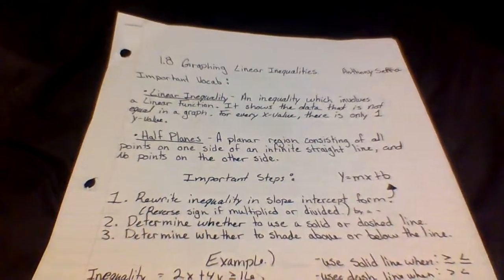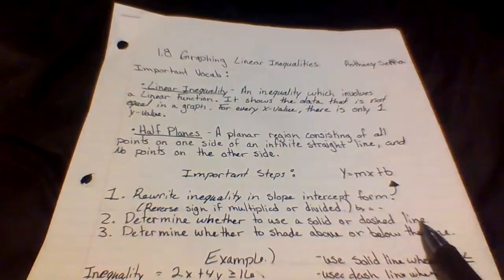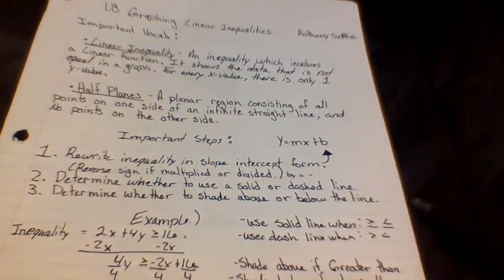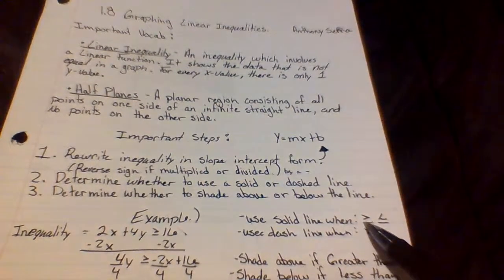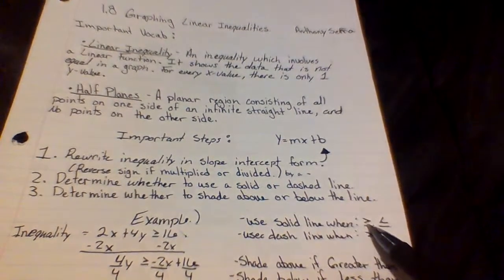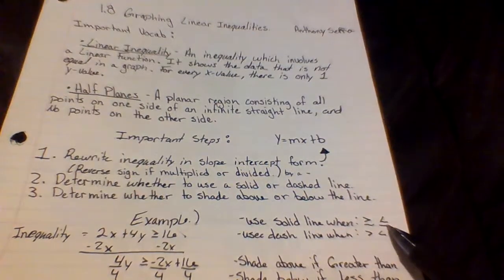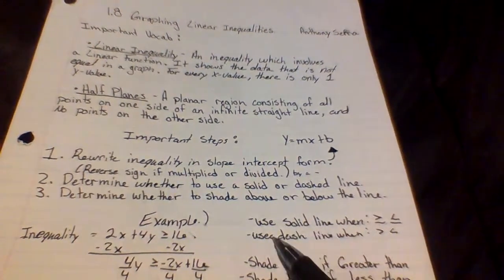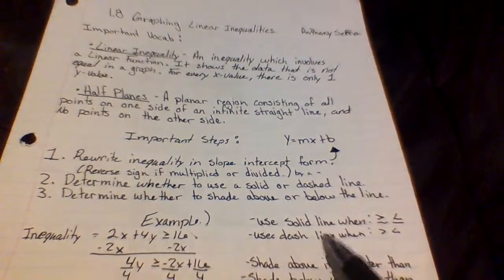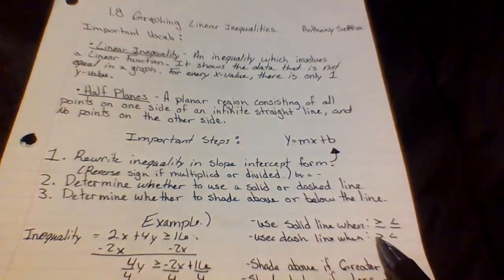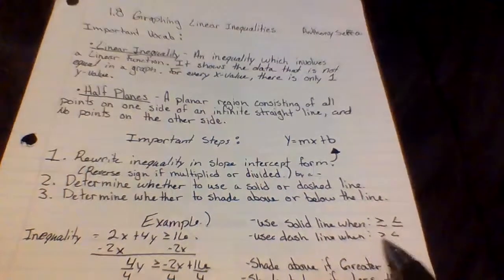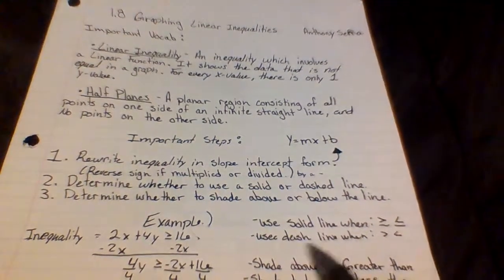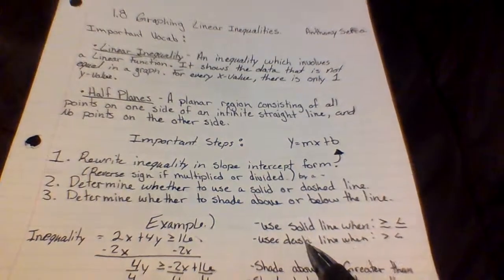Second step: determine whether to use a solid or dashed line. Use a solid line when the inequality is greater than or equal to, or less than or equal to. Use a dashed line when it is strictly greater than or less than — there is no equal to sign.